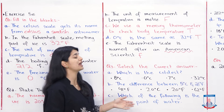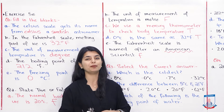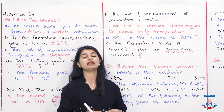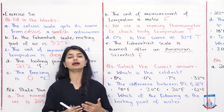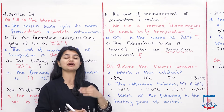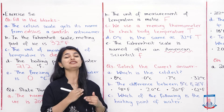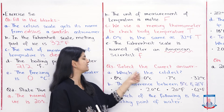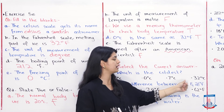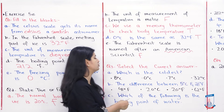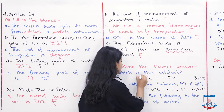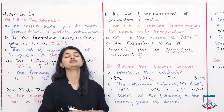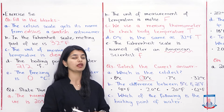Question number 3, select the correct answer. Part A: which is the coldest temperature? The lowest number is the lowest temperature. Among the options, 0 degrees is the lowest temperature, so we select 0 as the correct answer for the coldest temperature.